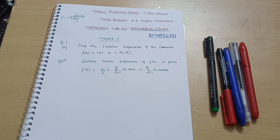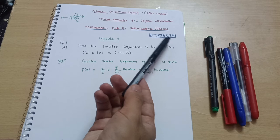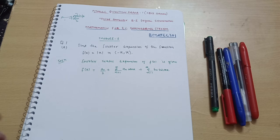Dear friends, welcome back to my channel. We are discussing the model question papers for the mathematics subject for the EC engineering stream. Its subject code is BMAT EC301. I have completed three questions from model question paper set 2, and I have provided the link in the description box. You can go through and watch those three problems.